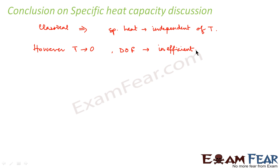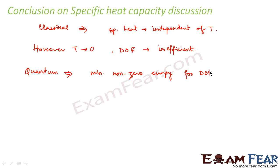So how do we explain this contradiction? This shows that classical mechanics was not enough. Therefore came quantum mechanics, which explained that a minimum non-zero amount of energy is required for degree of freedom to come into play — a small amount of energy has to be supplied. That is what quantum mechanics states. In classical mechanics, specific heat was said to be independent of temperature, but that was not a correct conclusion.